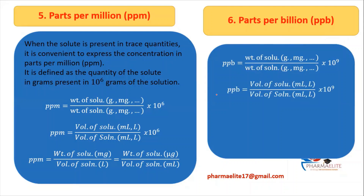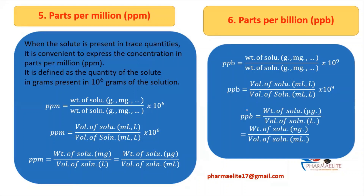The next formula for ppb is for liquid-liquid preparation: volume of solute / volume of solution in ml (or both in liters) × 10⁹. The last formula is for solid-liquid solution: weight of solute in micrograms / volume of solution in liters, or weight of solute in nanograms / volume of solution in ml.